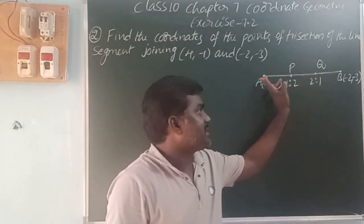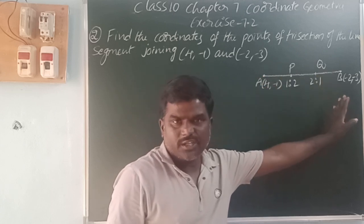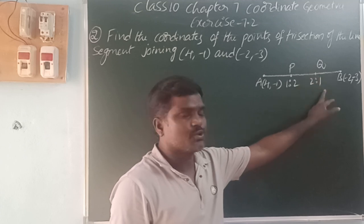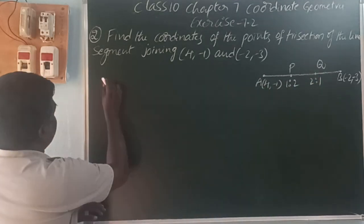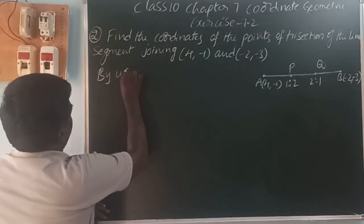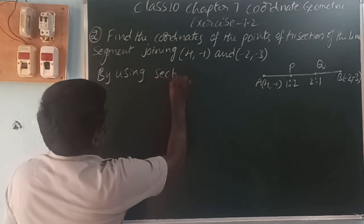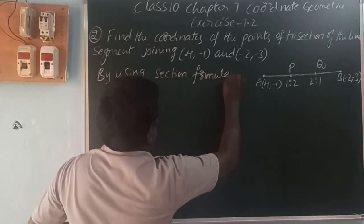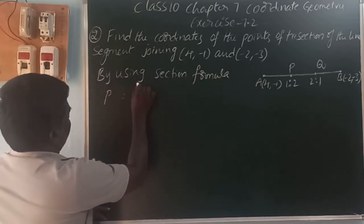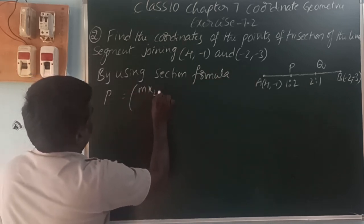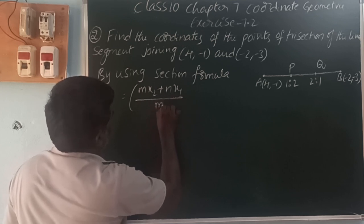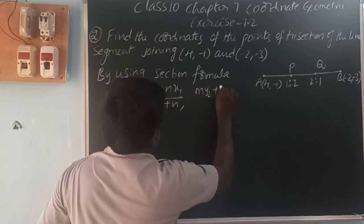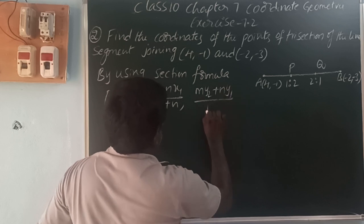At the point P, the ratio is 1 is to 2. At the point Q, the ratio is 2 is to 1. By using the section formula, P(x, y) equals mx2 plus nx1 by m plus n, and my2 plus ny1 by m plus n.